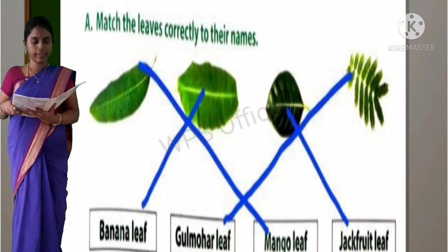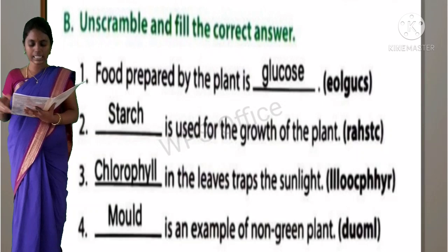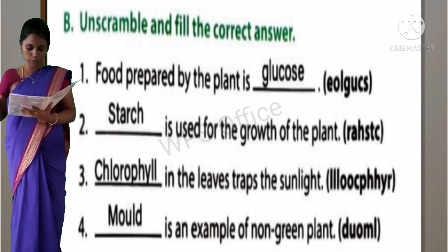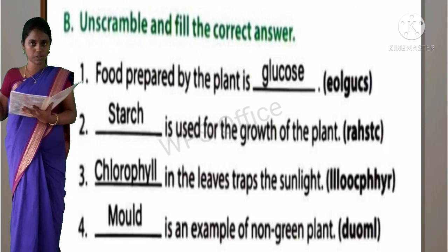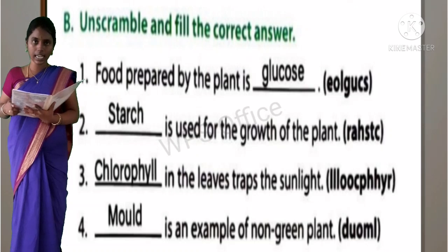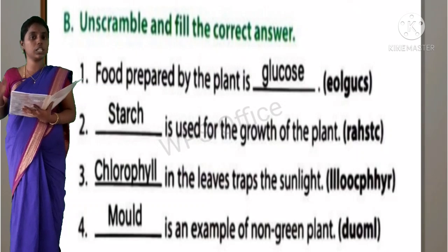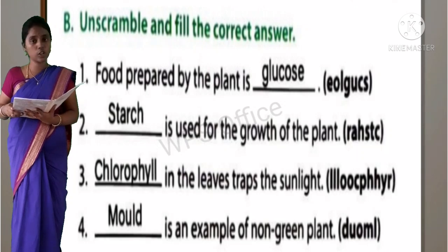Section B: Unscramble and fill the correct answer. First one: Food prepared by the plants is dash. You have to find the right answer by unscrambling. The answer is glucose - G-L-U-C-O-S-E. Food prepared by the plant is called glucose.